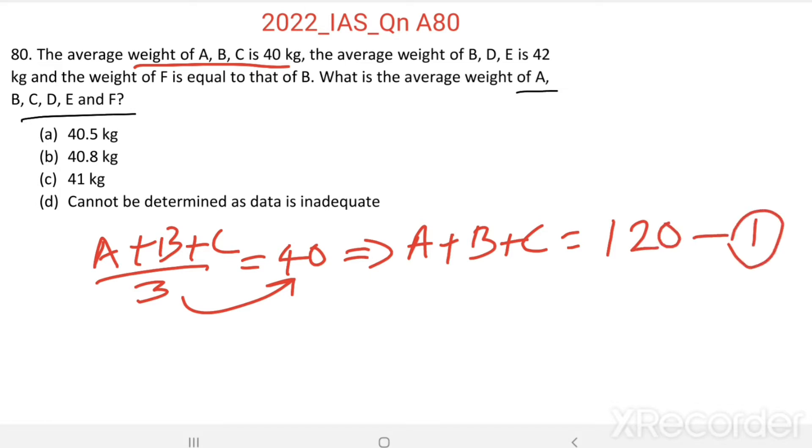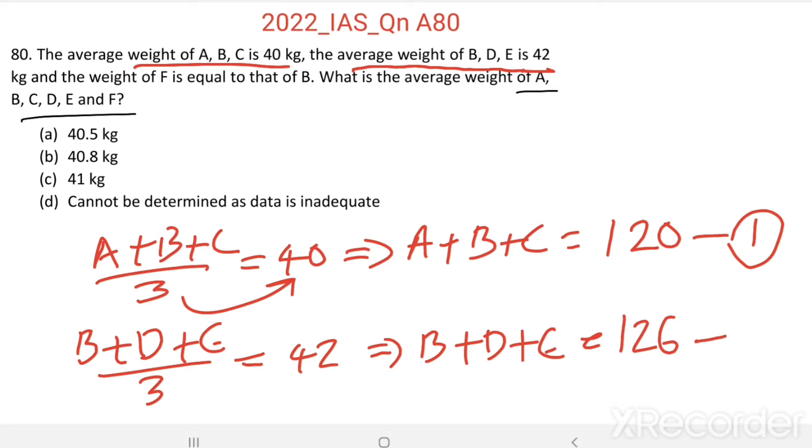Then, average weight of B, D, E is 42 kg. B plus D plus E divided by 3 equal to 42 kg. Then B plus D plus E equal to 126 kg. This is the second equation.